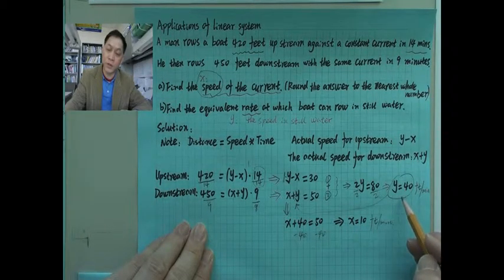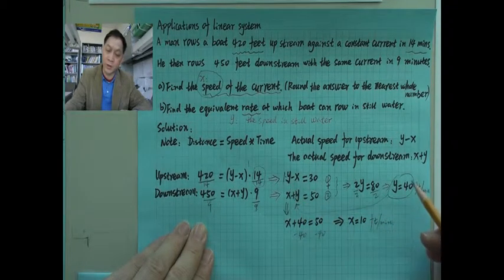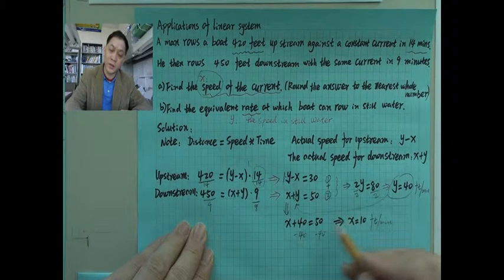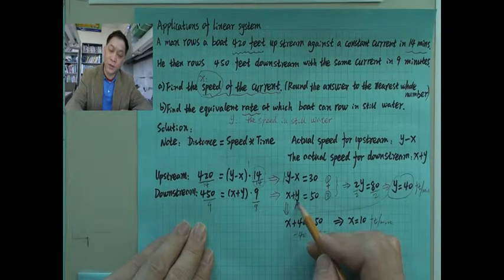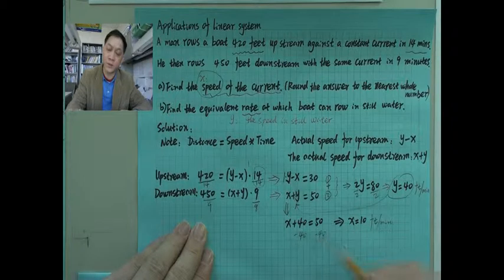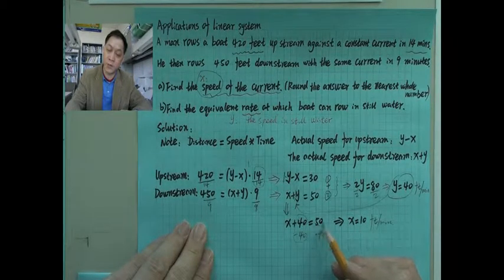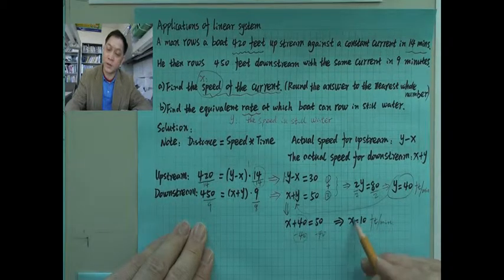Now that y equals 40, we substitute it back into x plus y equals 50, giving x plus 40 equals 50. Subtracting 40 from both sides gives x equals 10.